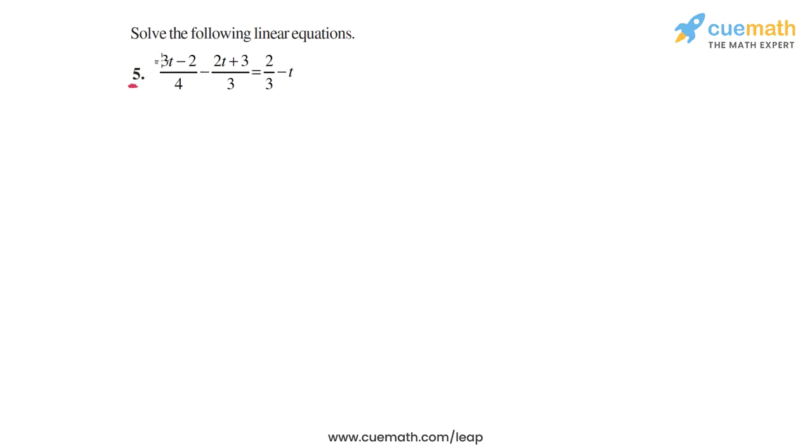In question 5, we have to solve this equation, which kind of seems a little bit complicated. The LHS terms are 3t minus 2 by 4 minus 2t plus 3 by 3, and on the RHS, we have 2 by 3 minus t. So this is the equation we have to solve.